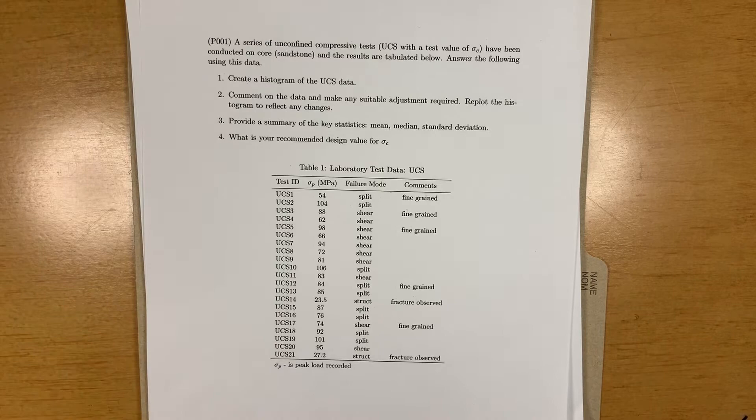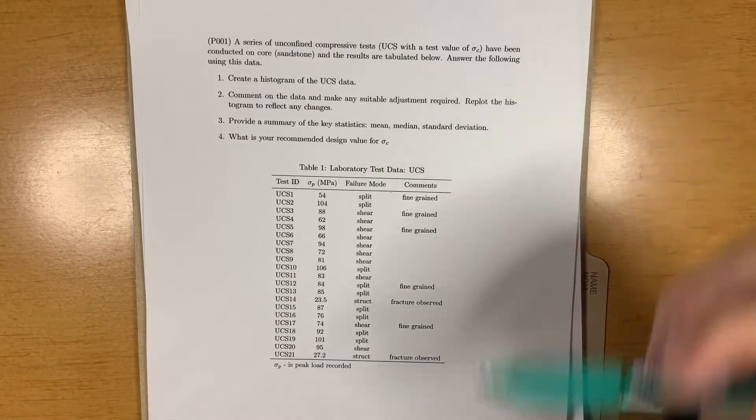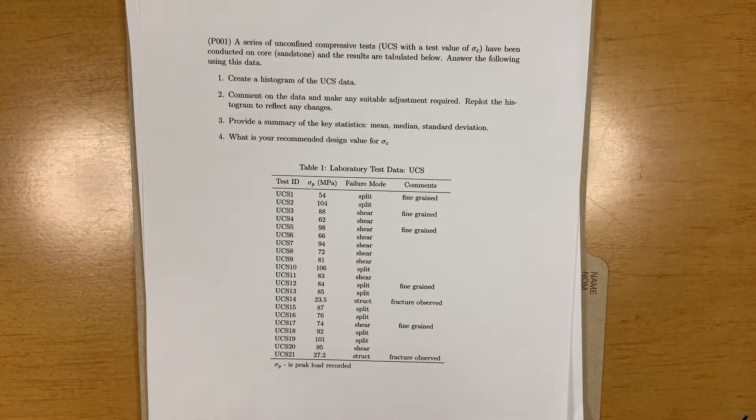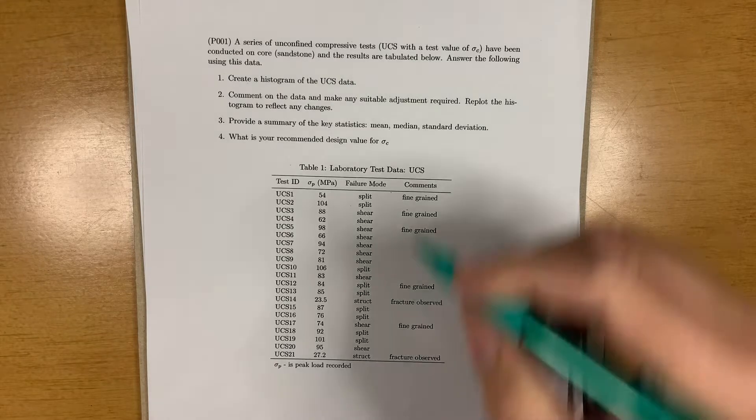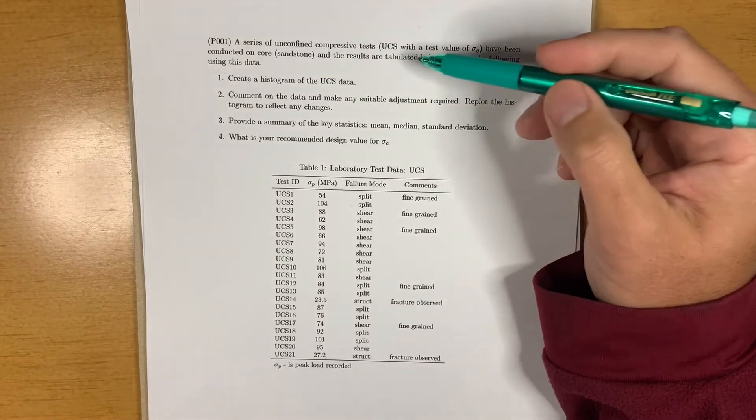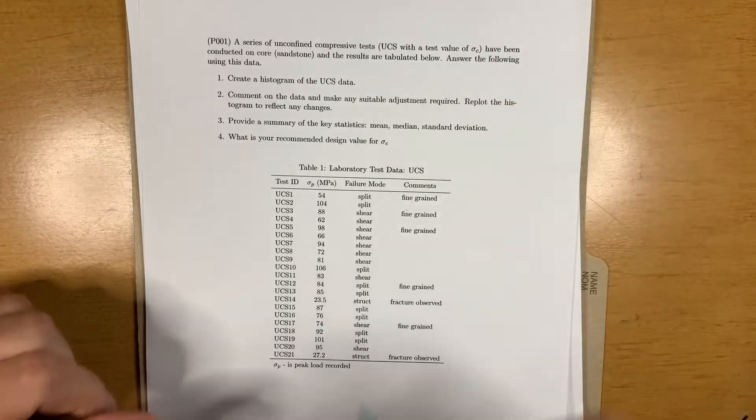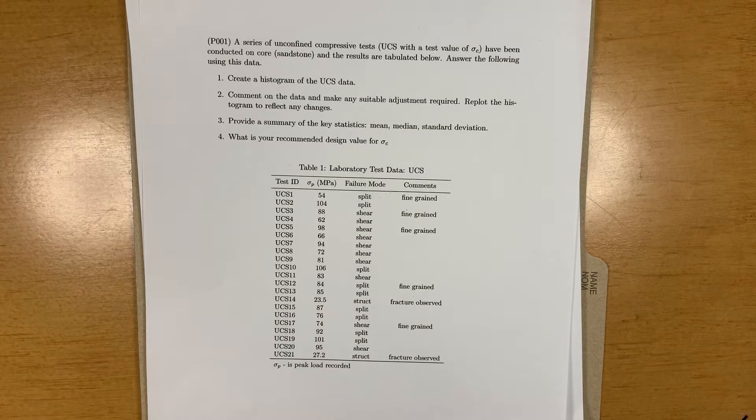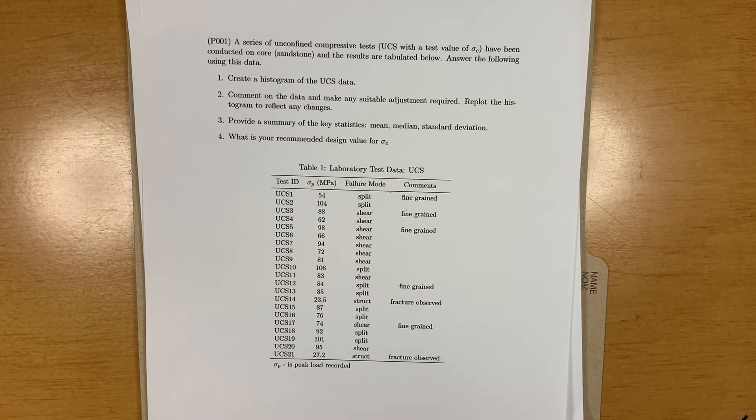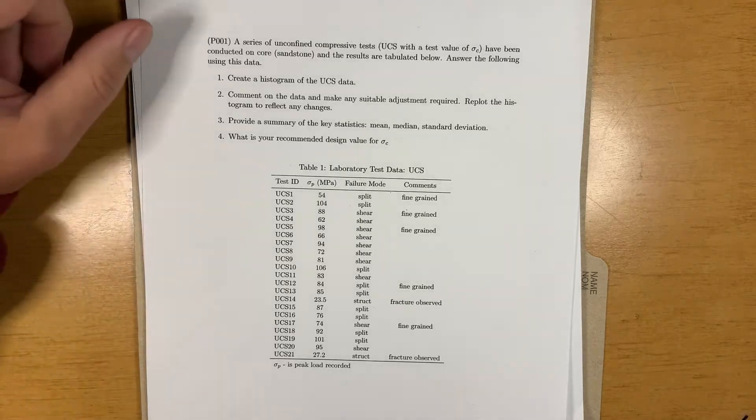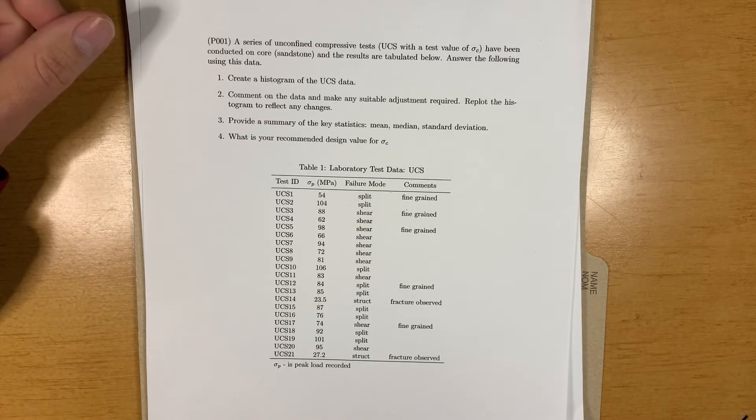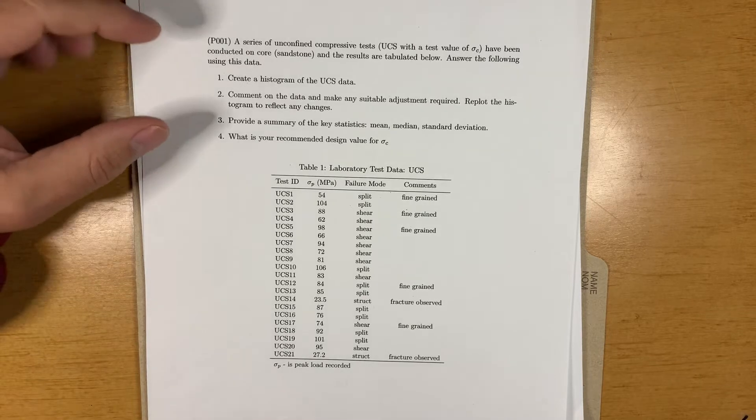In our lab, a series of unconfined compression tests were carried out, and the UCS is an abbreviation for that test, and the test value we use is sigma C. They were conducted on a bunch of cores of Wallace sandstone, which is a really nice local Nova Scotia sandstone, and the tests were conducted on core of approximately 50 millimeter diameter, which is standard for the UCS test.